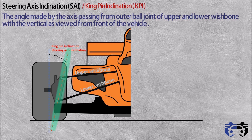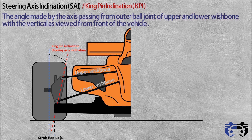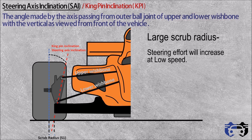The axis passing from the outer ball joints of the upper and lower wishbone is called the steering axis or kingpin axis. The angle made by this axis with the vertical is called the steering axis inclination or kingpin inclination. This is the axis about which the wheel will steer, so any input to the steering wheel will cause the tire to scrub in an arc formed at the bottom of the contact patch. The distance between the vertical line and the steering axis is called the scrub radius.